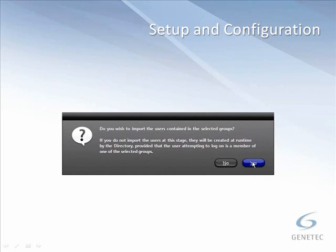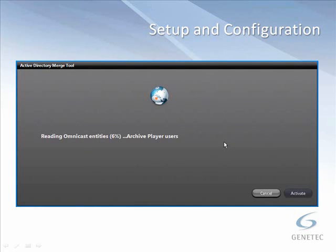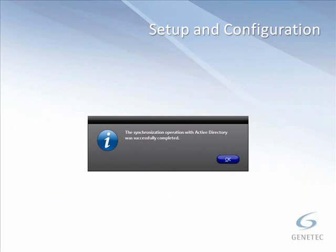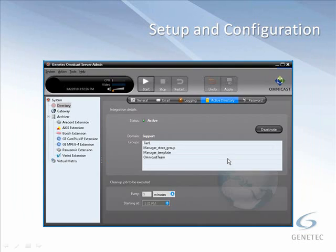We're going to say yes here. Once you confirm whether you want to import users, the Merge tool will run. When finished, it gives you a list of conflicts — basically any changes that will be made to the system. To confirm the import, click on the Activate button at the bottom right. This is your point of no return, where users and groups in Omnicast that do not have a match in Windows Active Directory will be deleted. After hitting Activate, you should get a message saying synchronization was completed. Hit OK, and we'll be back to the Active Directory tab with a status of Active in the Integration Details, with our list of groups below.